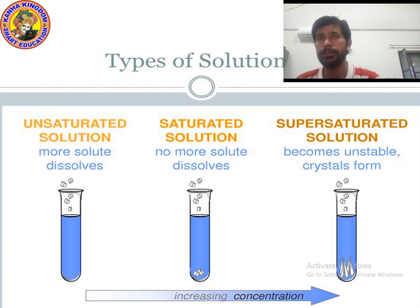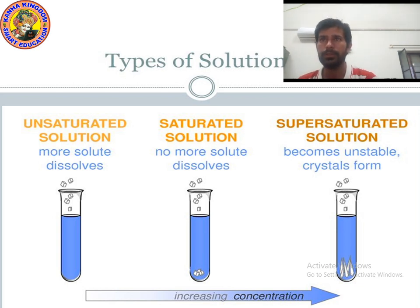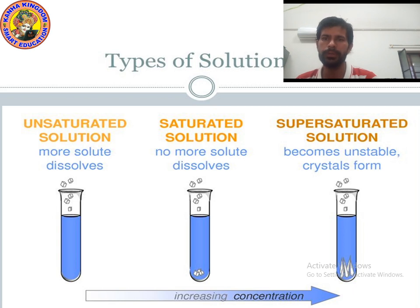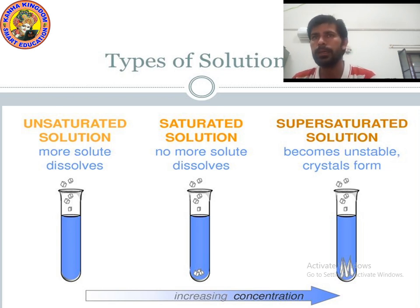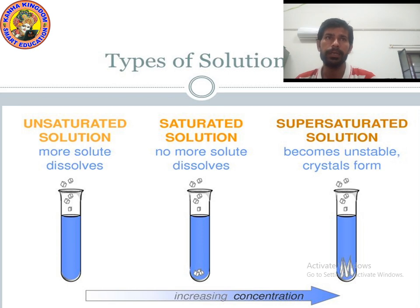There are 3 types of solution: saturated solution, unsaturated solution, and super saturated solution. Saturated solution means no more solute can be dissolved. You know, solute is that thing which dissolves in solvent, and solvent means dissolving medium. So saturated solution is a solution when no more solute can dissolve, and unsaturated solution is a solution in which more solute can be dissolved.